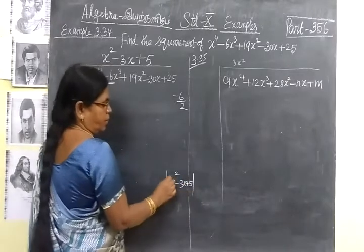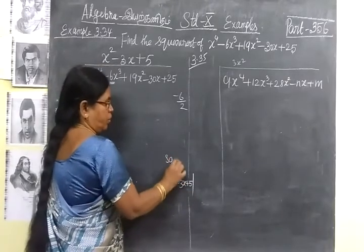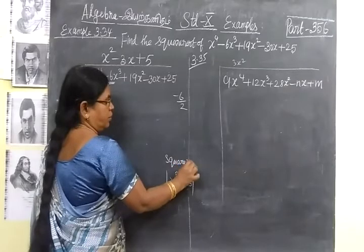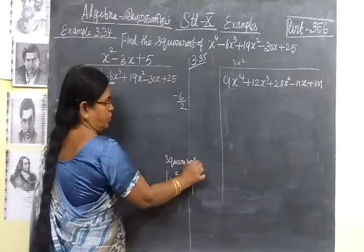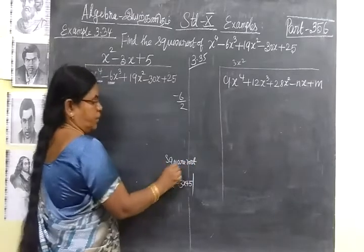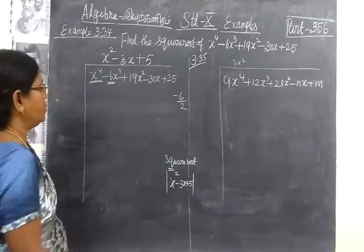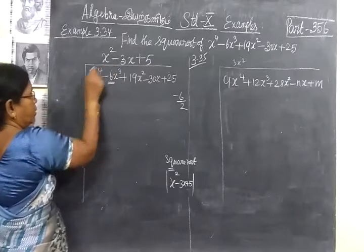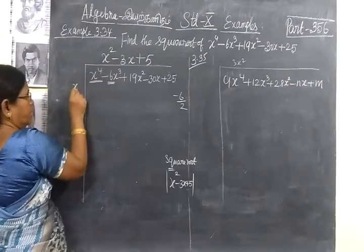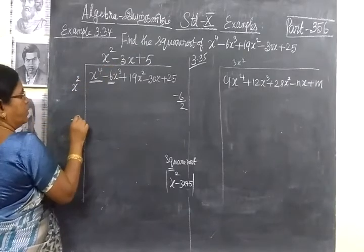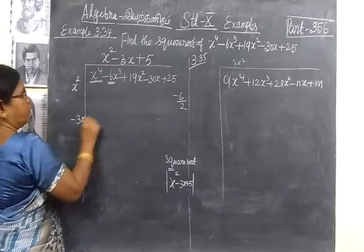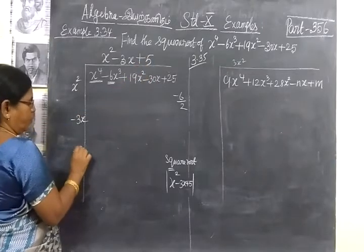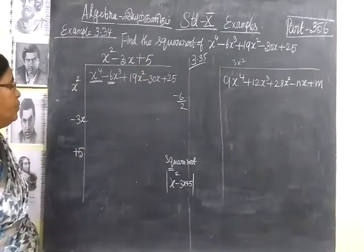This is the answer — the square root answer is this one. So in the beginning of this, you come to know the answer. Now you write x square here, and minus 3x, then plus 5. So we keep it ready.